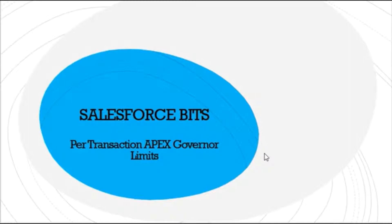Hello friends, welcome back to another video of Salesforce Bits. In this video I'm going to talk about the per-transaction Apex governor limits. Basically, Apex runs in a multi-tenant architecture, so there's a chance that Apex resources could monopolize shared resources. To avoid that, the governor associated with Apex issues warnings or errors whenever Apex exceeds the allotted limits. Let's go ahead and see the common and most important limits of Apex.